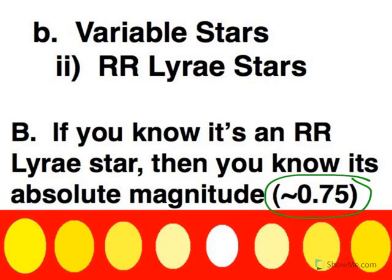So, how do you know it's an RR Lyra? You get that from the spectrum — that's how you identify that you have an RR Lyra star. And then once you know that for sure, you've got the absolute magnitude.